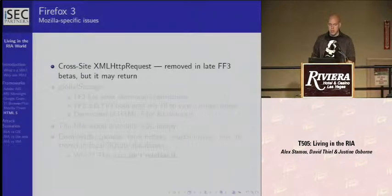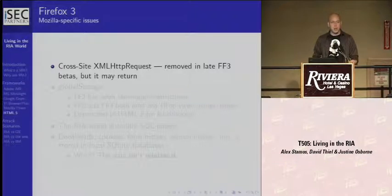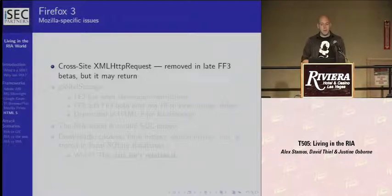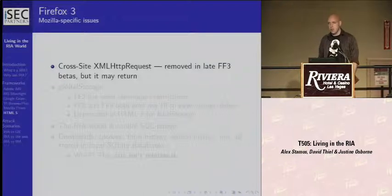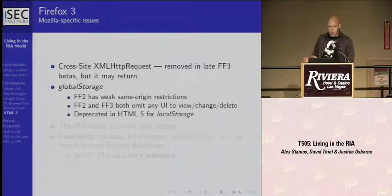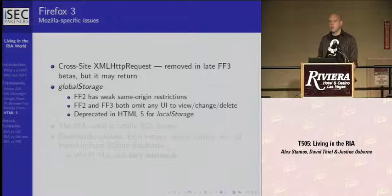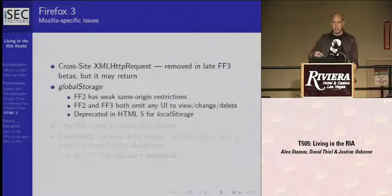There are a couple things specific to Firefox 3 to go through. Up until beta 2, they were still considering pushing cross-site XMLHttpRequests with no real defining policy. Thankfully it was pulled out before Firefox 3 shipped, but as near as I can tell, that's still an open issue. Firefox 3 also has a global storage mechanism, and this highlights part of the problem — you would think a standards process works where people write a standard, review it, then implement it. That's not how standards work at all.